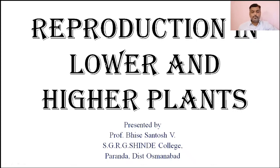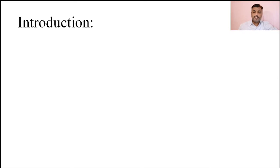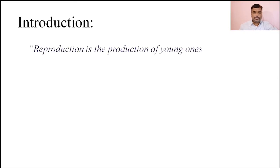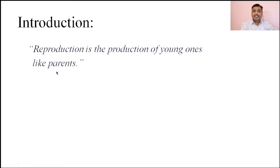Hello students, we are going to revise our topic reproduction in lower and higher plants which we have seen in our previous lectures. First of all we will discuss about what is meant by reproduction. Reproduction is a process in which the young ones, which are similar to their parents, are produced. We can define reproduction as the production of young ones which are similar to their parents.